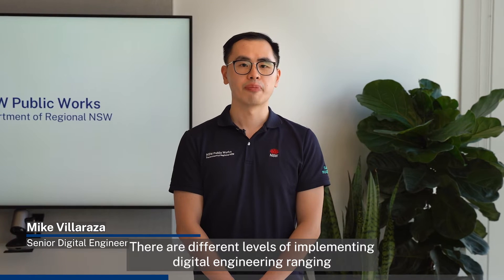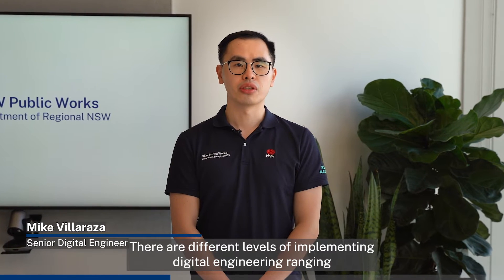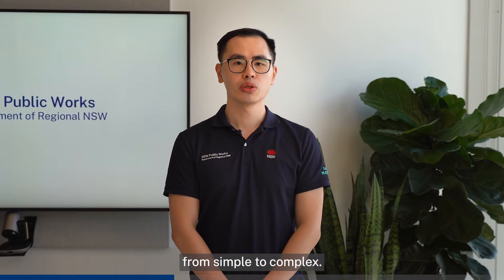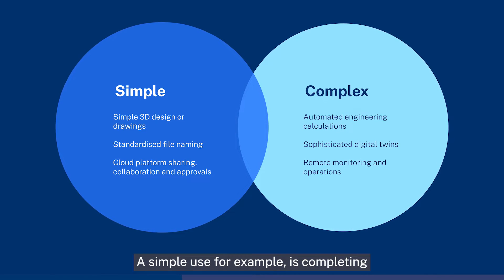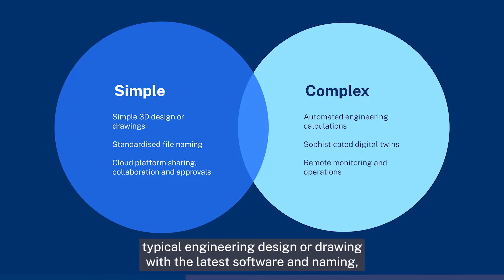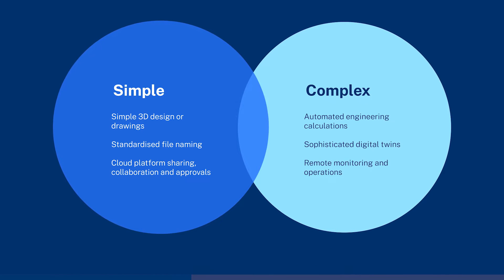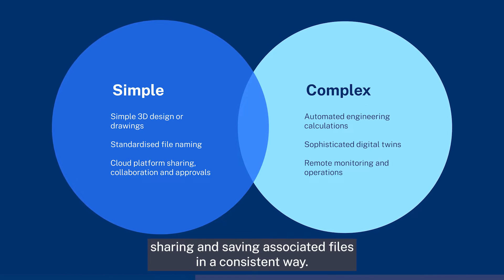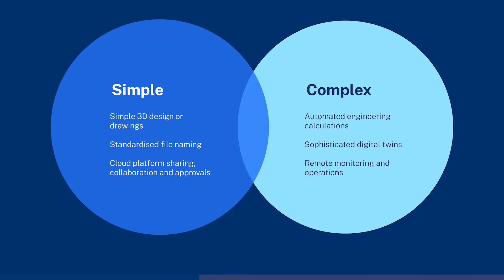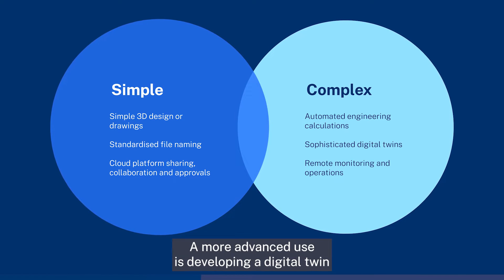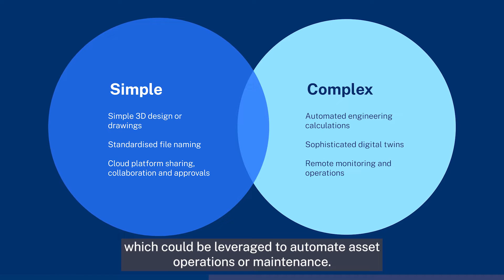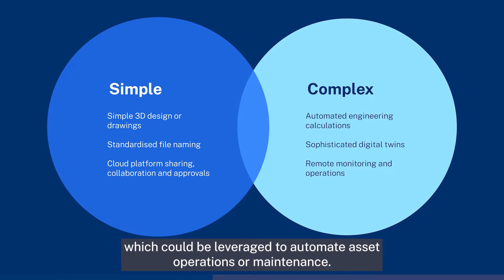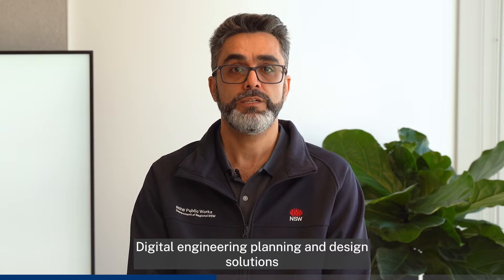There are different levels of implementing digital engineering, ranging from simple to complex. A simple use, for example, is completing typical engineering design or drawing with the latest software, and naming, sharing and saving associated files in a consistent way. A more advanced use is developing a digital twin, which could be leveraged to automate asset operations or maintenance.